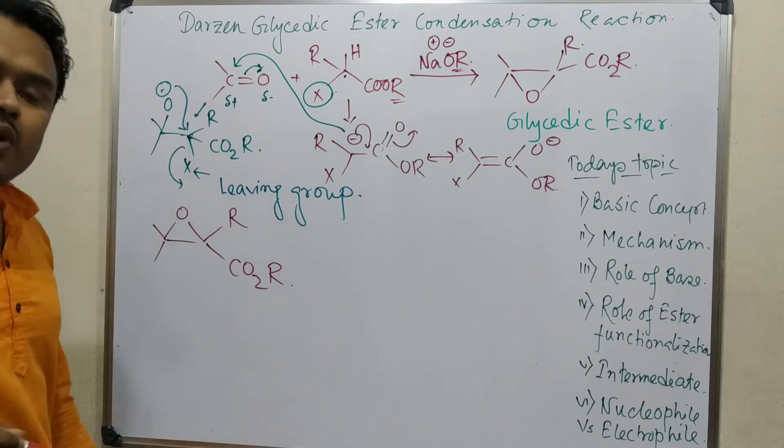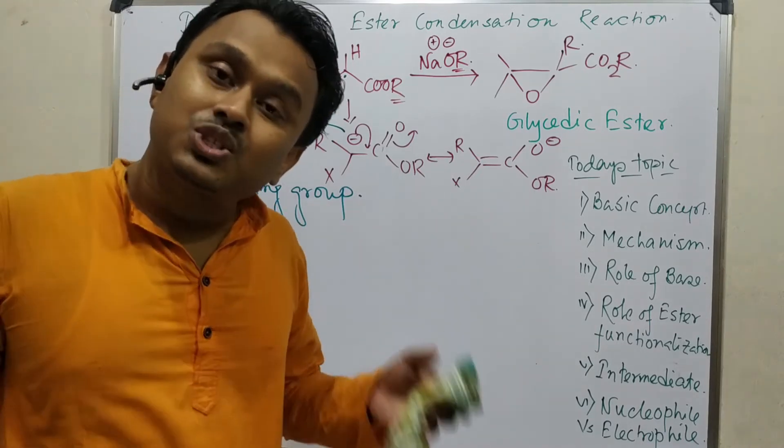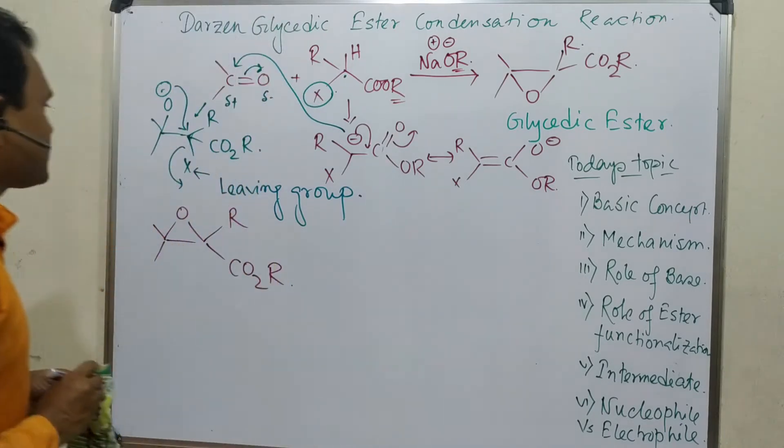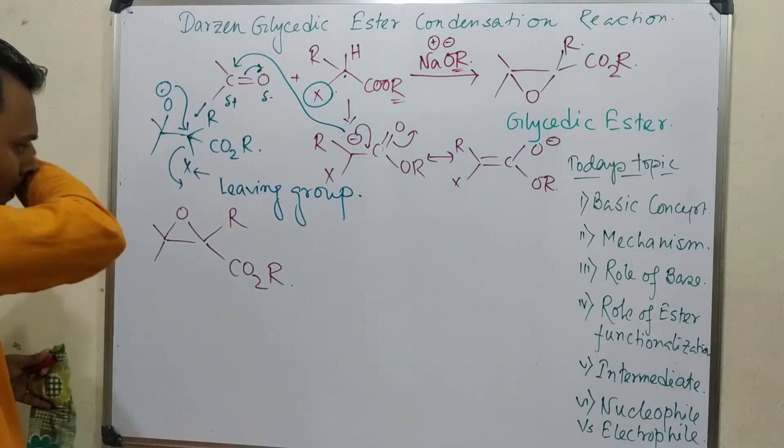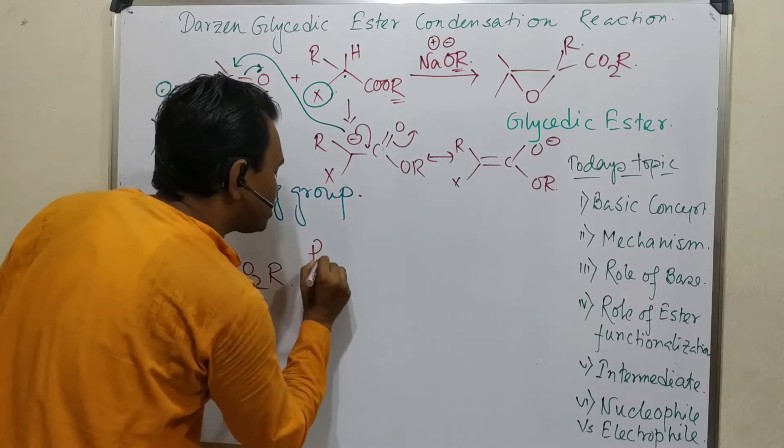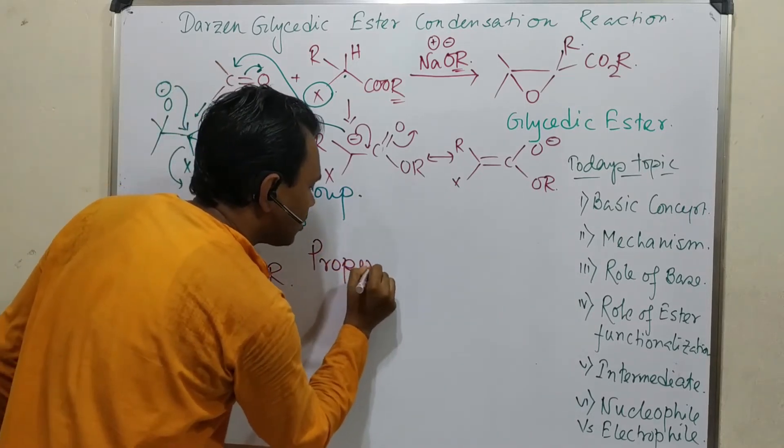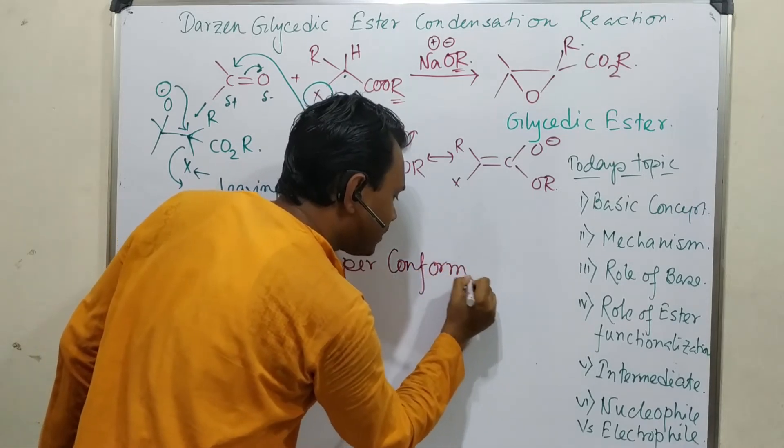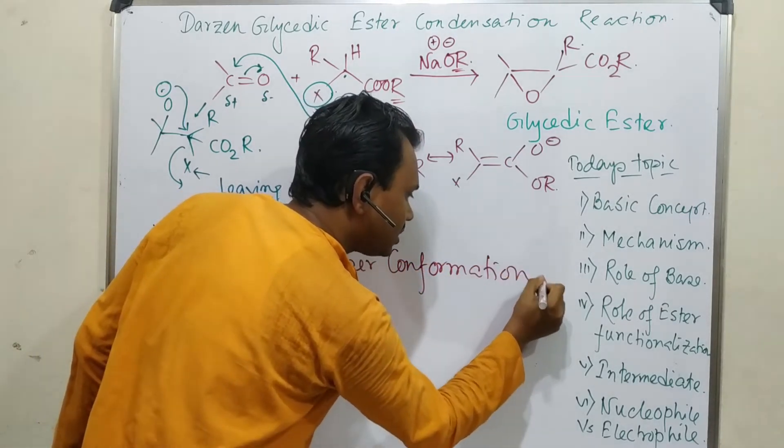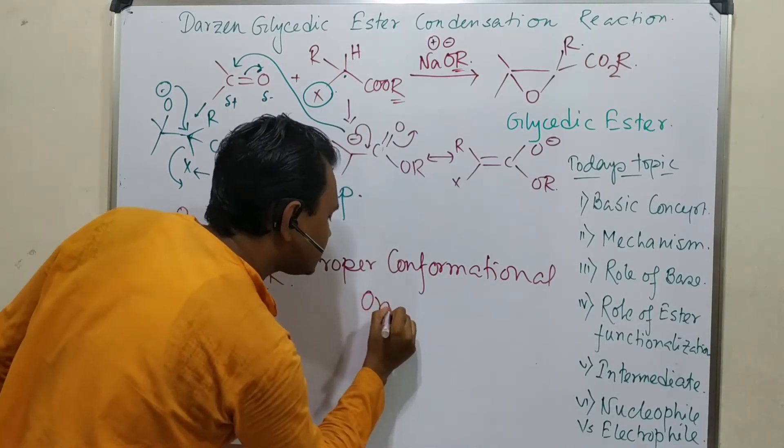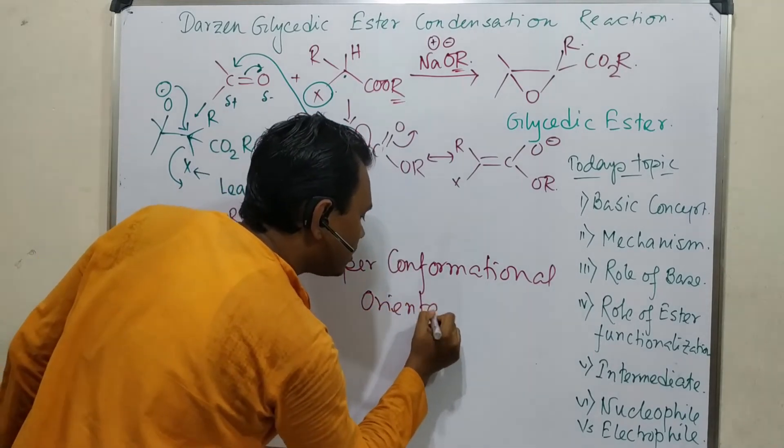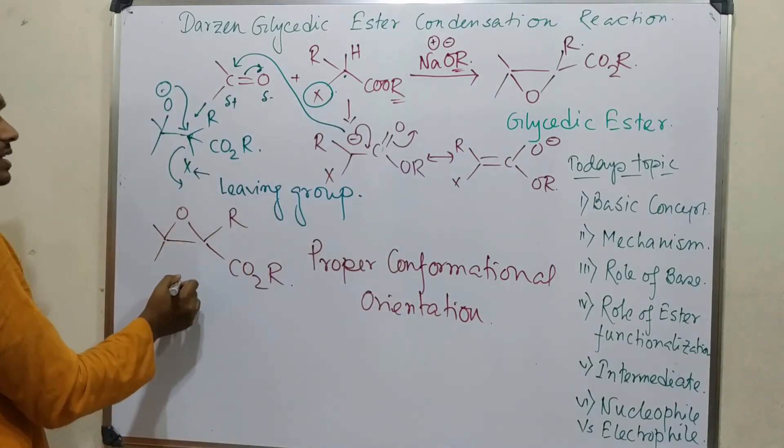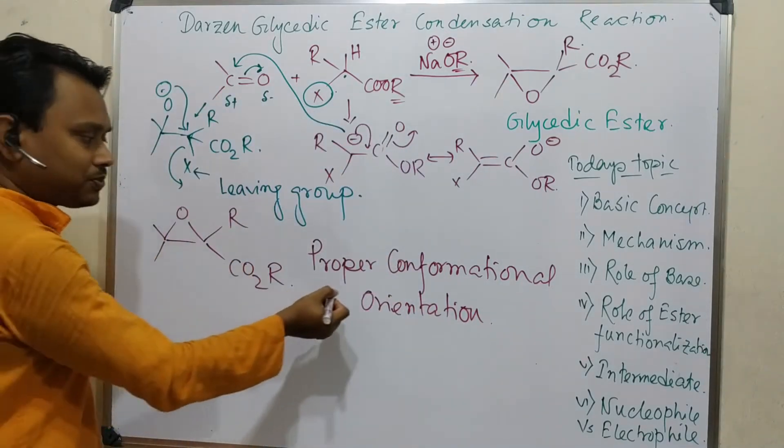Now question: we always say that three-member rings are strained, yet still why is it formed? Because of proper conformational orientation. Please keep this word in mind: proper conformational orientation.